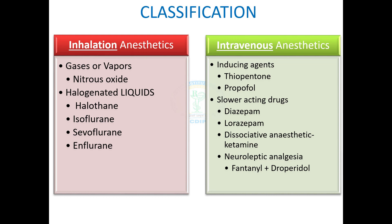Intravenous anaesthetic agents comprise inducers and maintenance drugs. Inducer agents are thiopental and propofol. Slower-acting maintenance drugs are benzodiazepine derivatives like diazepam and lorazepam. Additionally, ketamine causes dissociative anaesthesia, and fentanyl with droperidol are used intravenously to induce neuroleptic analgesia.